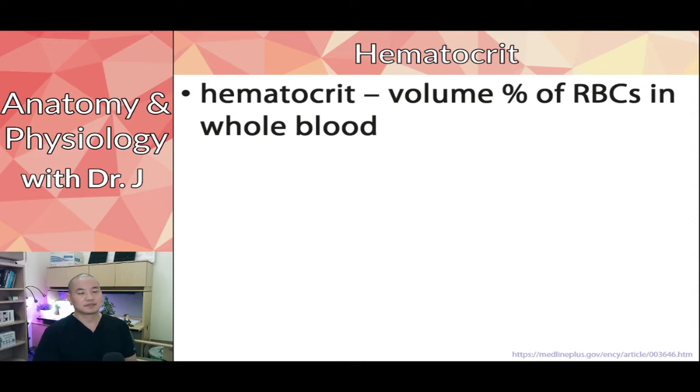In previous years, we went with formed elements because we're using the Martini version. The Martini version talks about formed elements, but pretty much most sources, including our OpenStax textbook, they say hematocrit is the percent volume of red blood cells instead of formed elements.